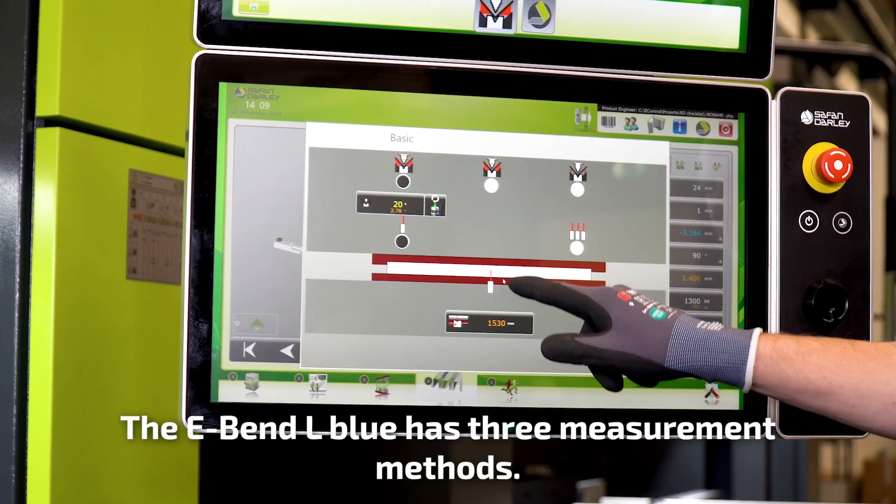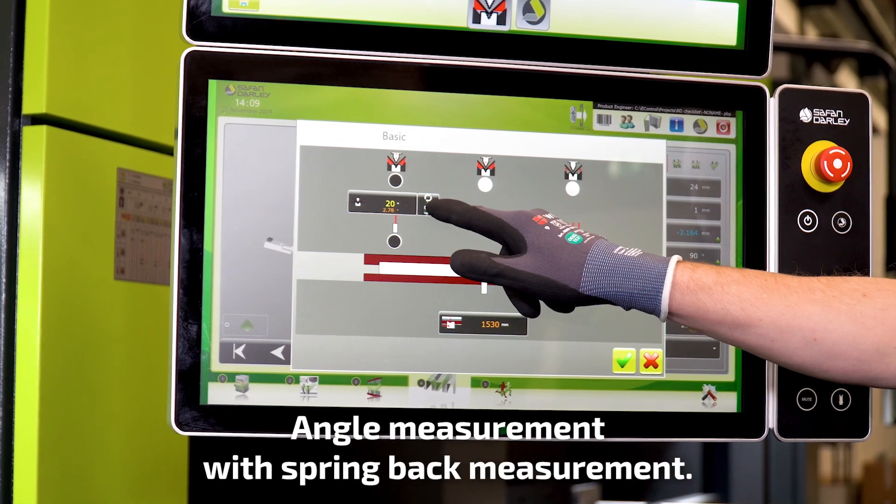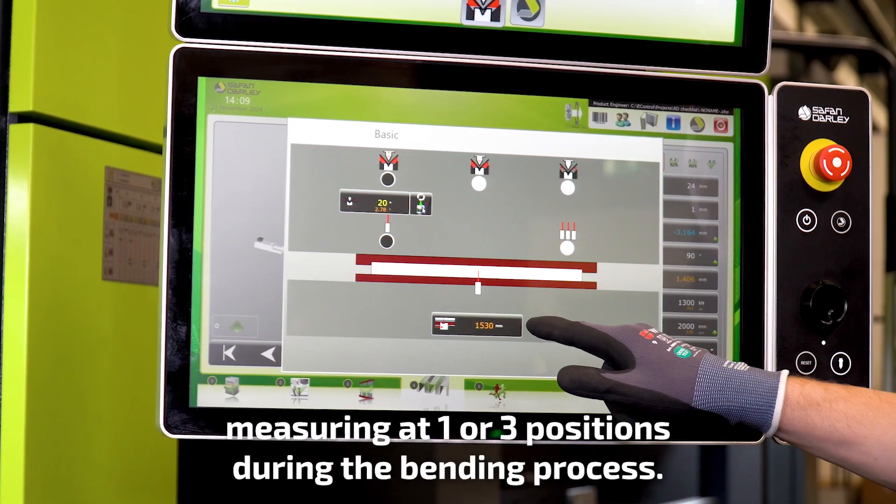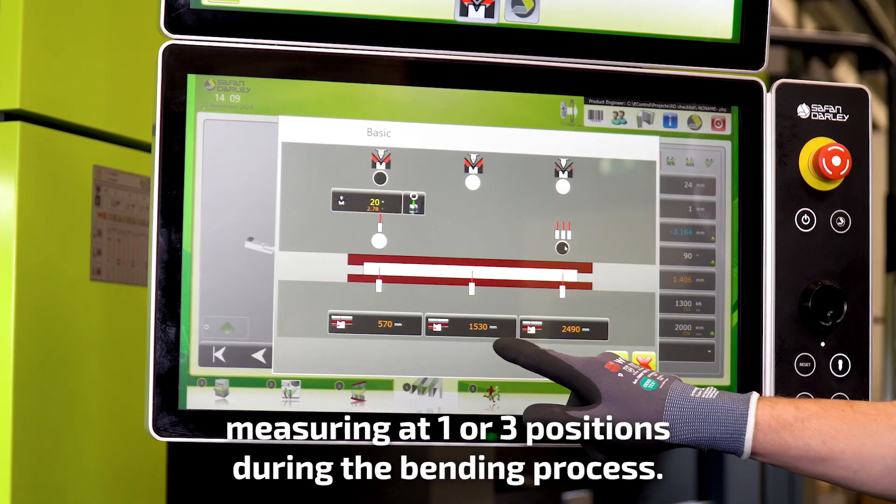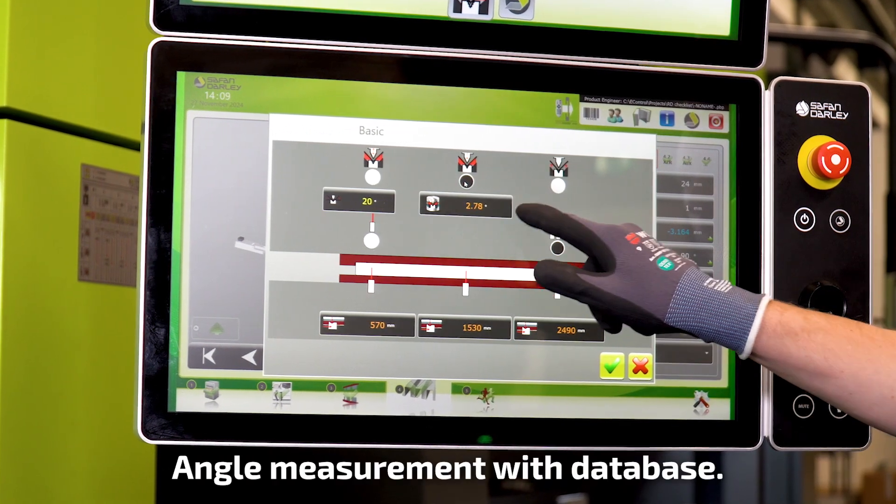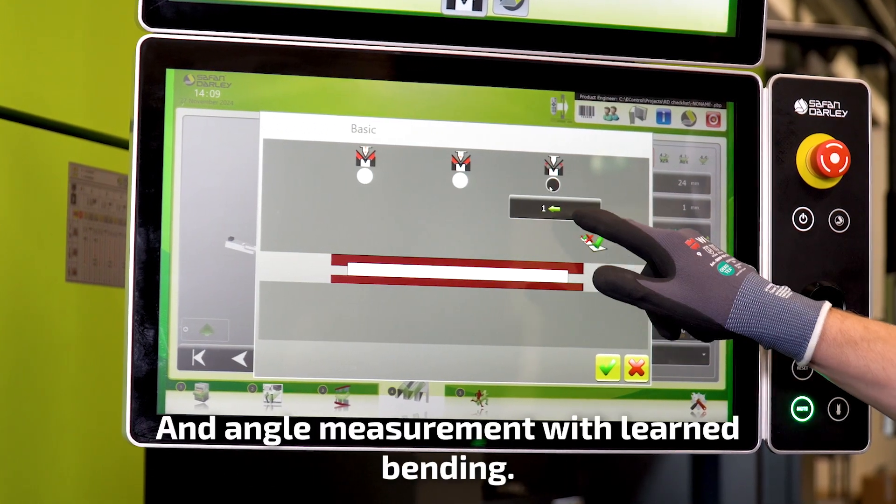The E-Bend L-Blue has three measurement methods: angle measurement with spring back measurement, measuring at one or three positions during the bending process; angle measurement with database; and angle measurement with learned bending.